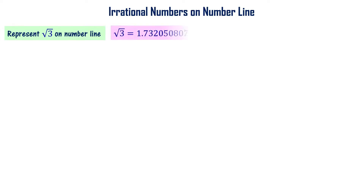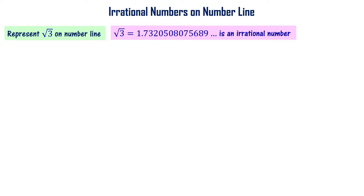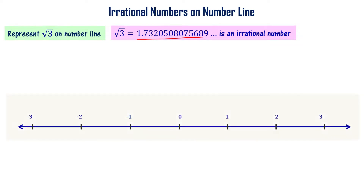Now let's represent √3 on the number line. √3 is also an irrational number — it is a non-terminating, non-recurring decimal. Its value is 1.732..., so it is greater than 1 and less than 2, lying between 1 and 2 on the number line.